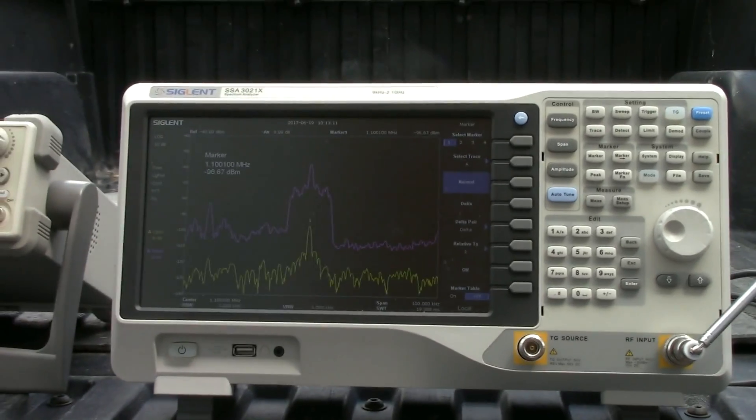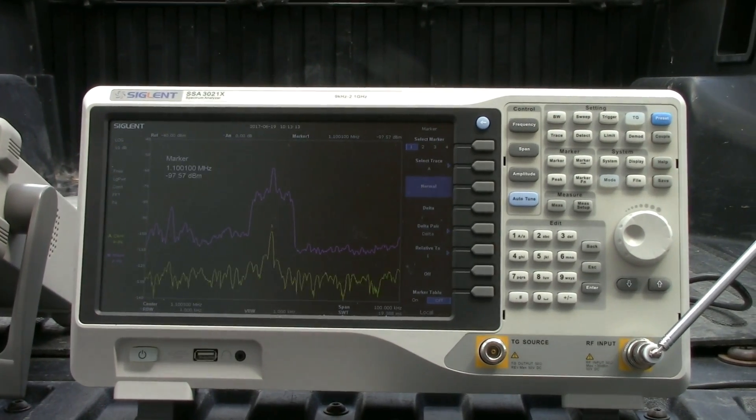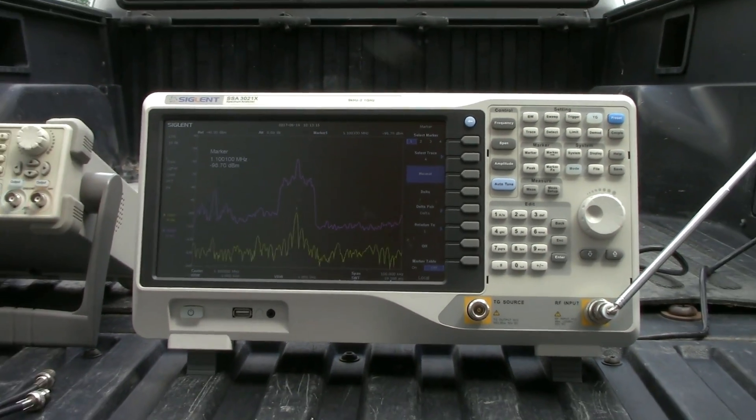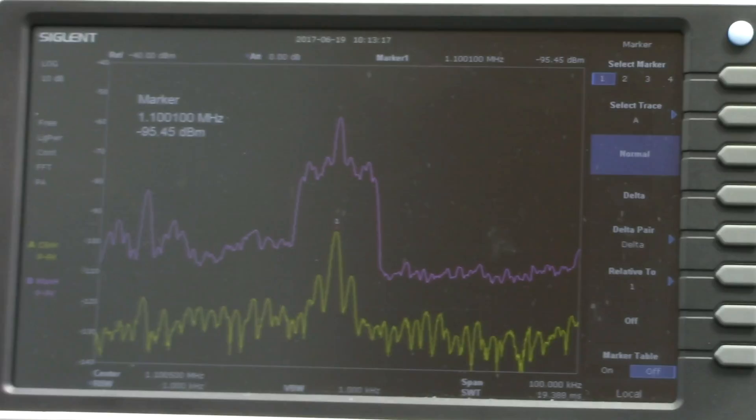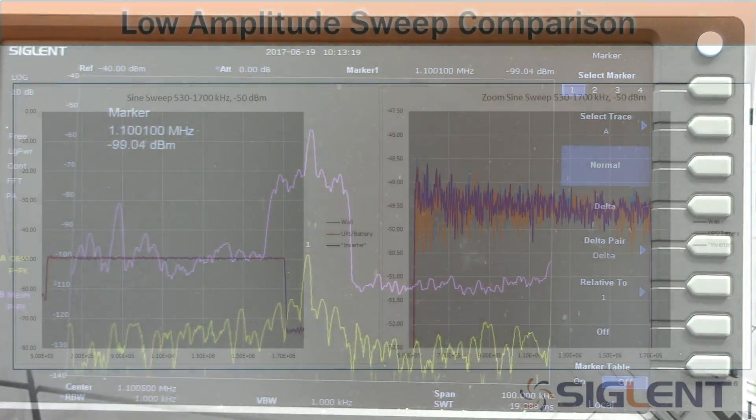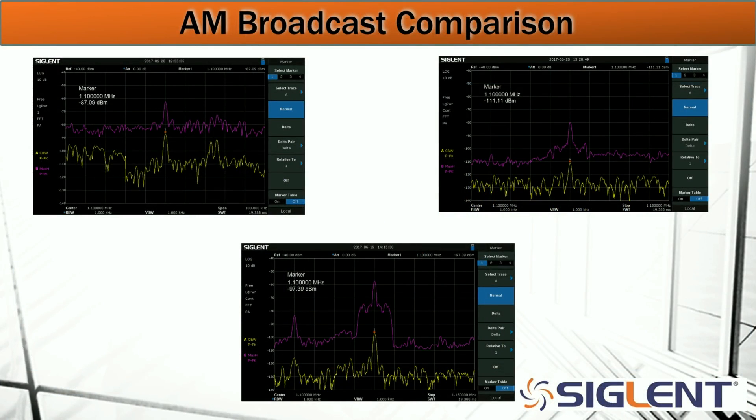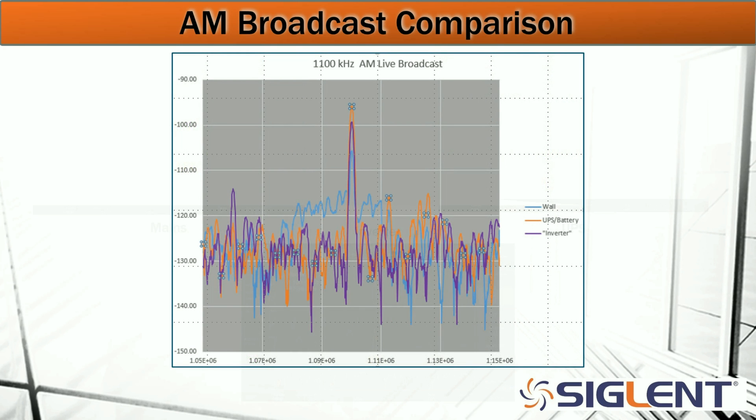We're at 1.1 meg. We're actually seeing the sidebands and everything, so the frequency and amplitudes all seem to compare quite nicely to one another. But we'll definitely get a better look at that if we compare the raw CSV data. Here are some screenshots of that AM broadcast: mains, UPS, and inverter. And now we're going to switch over and take a look at that raw CSV data that we collected and overlaid. And again, very good correlation.